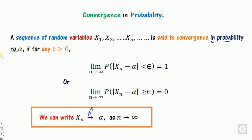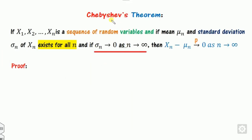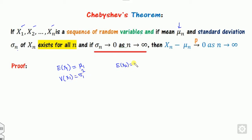As n approaches infinity. Now, when x_1, x_2, ..., x_n is a sequence of random variables and mu_n and sigma_n are their respective means and variances — for example, the mean of x_2 is mu_2 and the variance of x_2 is sigma_2 — you can prove that x_n converges to mu_n in probability as n approaches infinity.